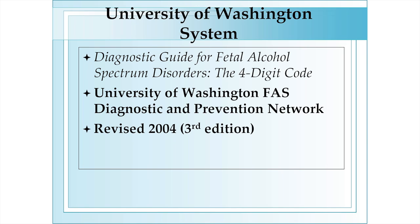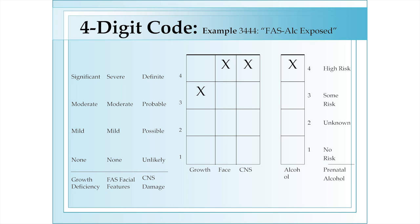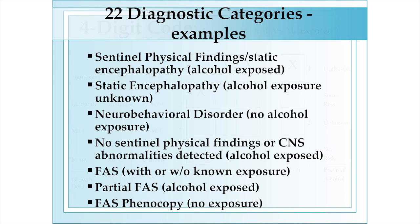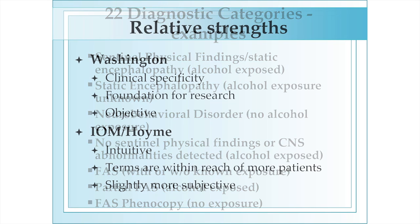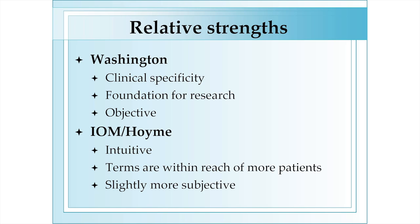The University of Washington system has been developed and revised through the UW Fetal Alcohol Syndrome Diagnostic and Prevention Network. It employs a four-digit code to characterize growth manifestations, facial features, central nervous system injury, and alcohol exposure, generating a diagnostic category from 22 separate options. Both systems have legitimacy and clinical utility. The Washington system has the advantage of being more specific, providing an outstanding foundation for longitudinal research and introducing objectivity. The Institute of Medicine categories are more intuitive and, in clinical experience, more accessible to most patients, though they introduce some subjectivity.